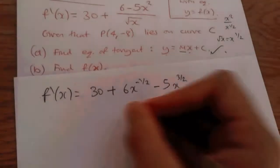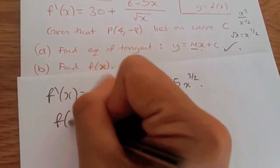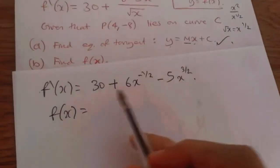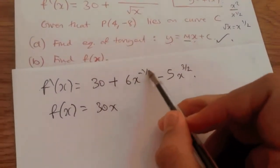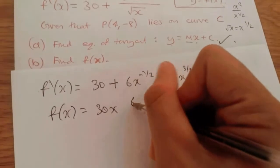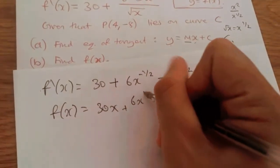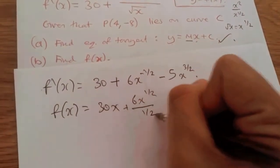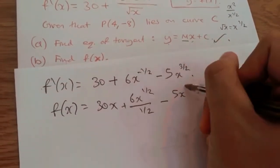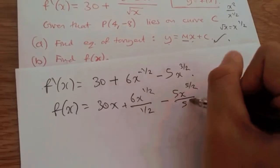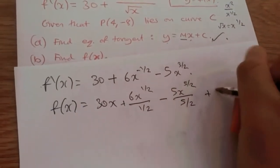So we just really have to integrate this. So integrating this, we're going to have f(x), which is the regular equation. Integral of 30 is 30x. Integrating this term, so we're going to add the power, so it'll be a half. So it'll be 6x^(1/2), and divide it over its power. Same thing, repeat the process. 5x, add 1 to the power, you get 5 over 2, divided by 5 over 2. And of course, plus c.